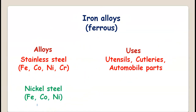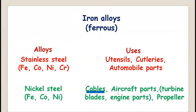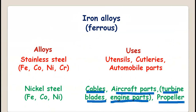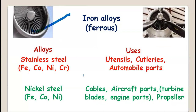The second ferrous alloy is nickel steel. It is an alloy of iron, cobalt, and nickel. Its uses include cables, aircraft parts, and turbine blades. In turbine blades and propeller fan blades, nickel steel is used.